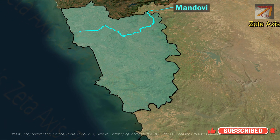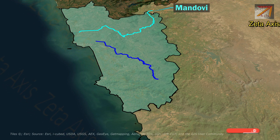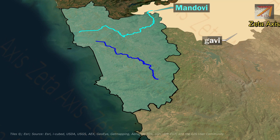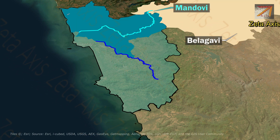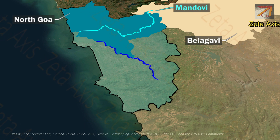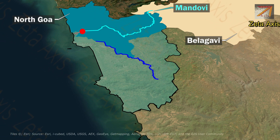Now let's discuss important rivers of Goa. The Mondovi and the Zuari are the two principal rivers in the state of Goa. The Mondovi river originates from Belgaum district in Karnataka and enters Goa in North Goa district. The Mondovi river flows into the Arabian Sea near Panaji.